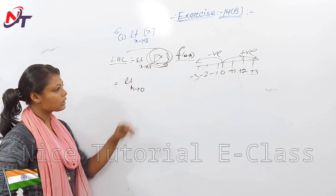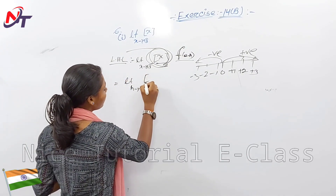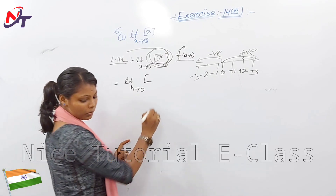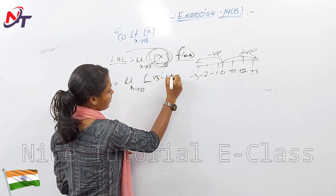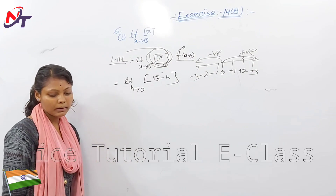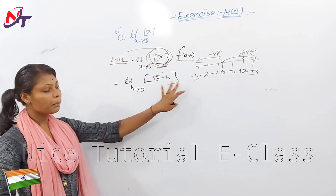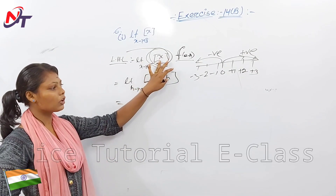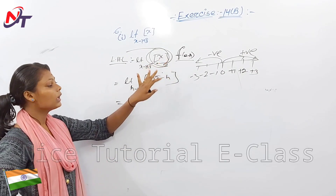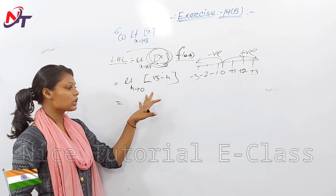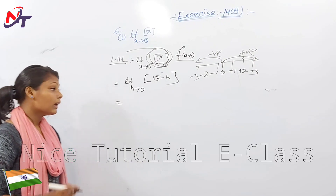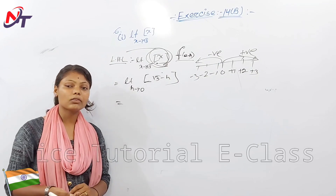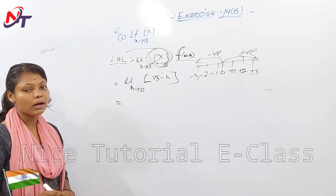The left-hand limit: we substitute x = √3 minus h, so we get the limit as h tends to 0 of bracket(√3 minus h).